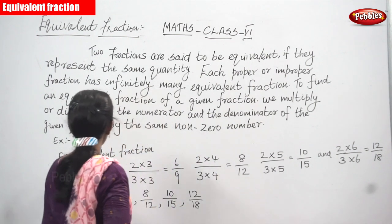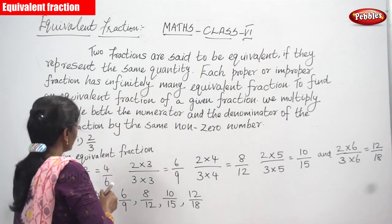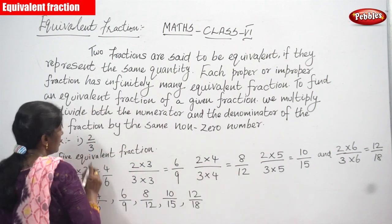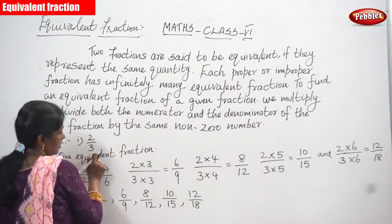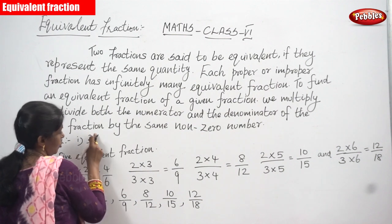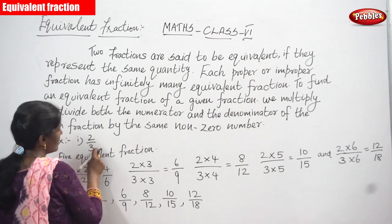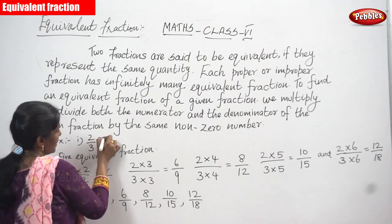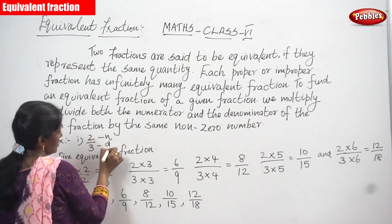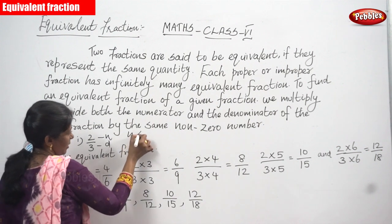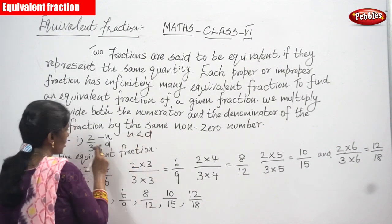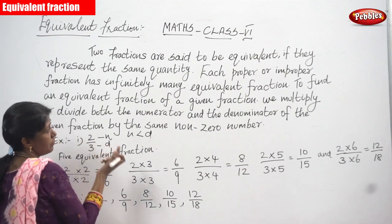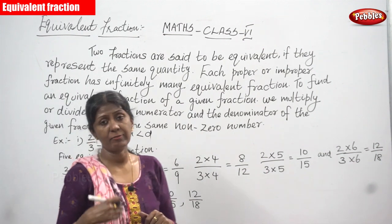For example, the question given is 2 by 3. In 2 by 3, 2 is the numerator and 3 is the denominator. Since the numerator 2 is less than the denominator 3, it is a proper fraction.